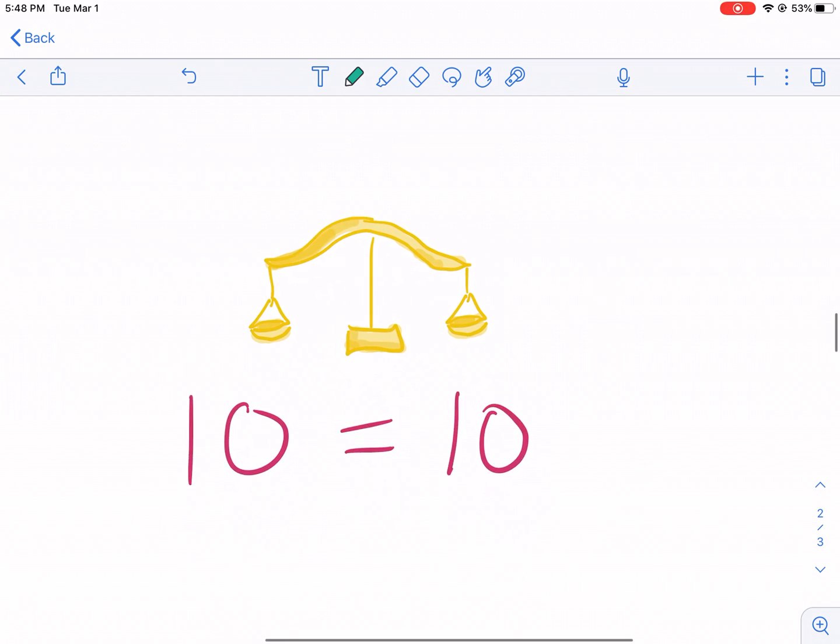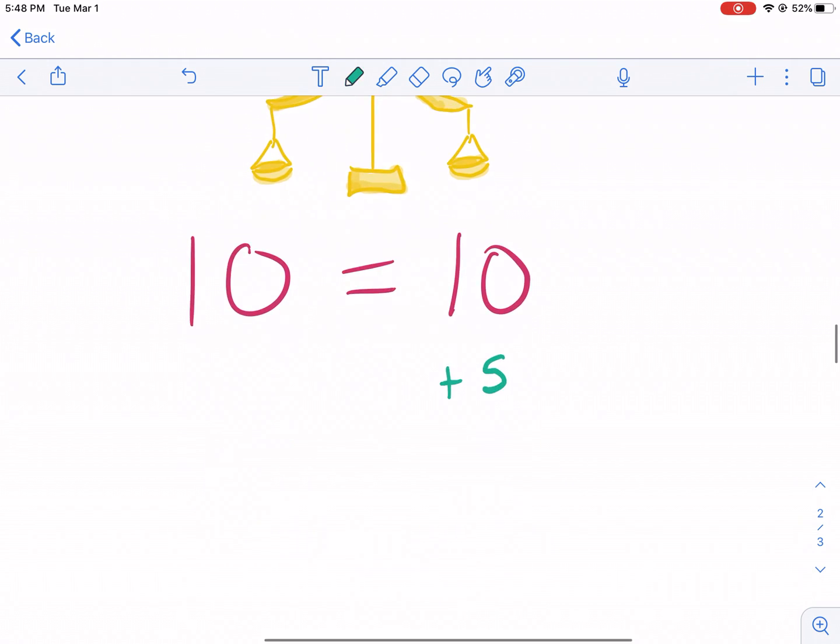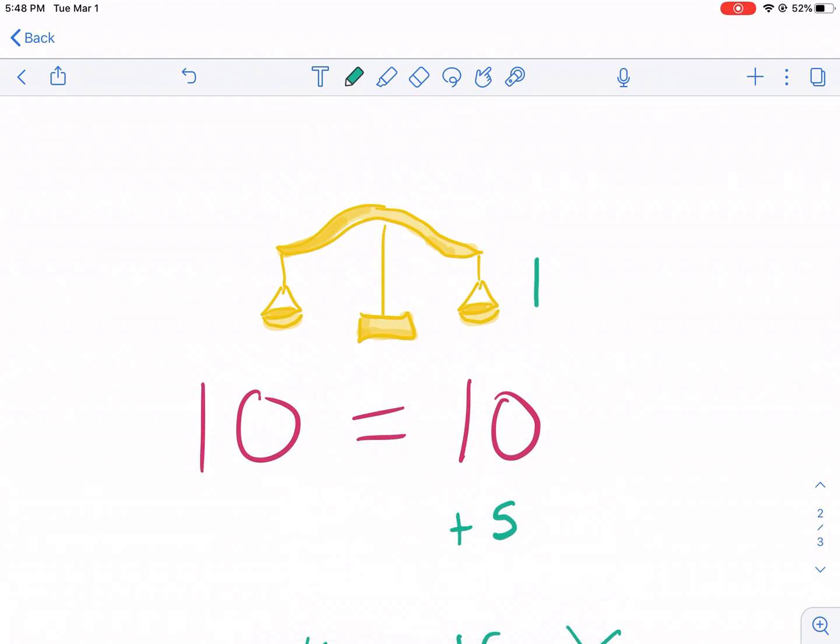But what happens if we add 5 to one side of the equal sign and not to the other? We did it on the right side, but not the left side. What does that do? Well, we'd get the statement 15 equals 10, and we know that is not true. That would be the equivalent of adding weight to this side and not to the left side. So what would happen? Obviously, it would tilt down on the right side.